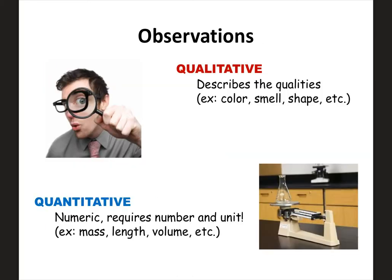There are two different types of observations to be aware of, especially in lab. Qualitative observations look at the qualities or characteristics of something — color, smell, and so on. The word qualitative starts with 'qual,' which sounds like 'qualities.' In chemistry, we also do a lot of quantitative observations. Quantitative is when you're actually measuring something and getting a number with a unit, like a mass or a length. The word starts with 'quantity.' You definitely need to know the difference between these two.